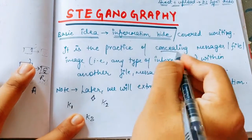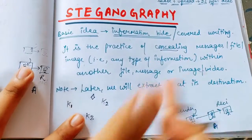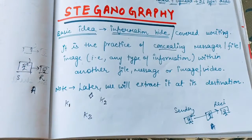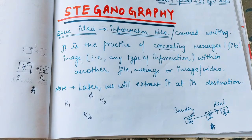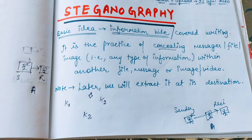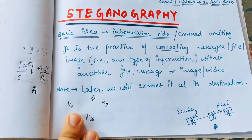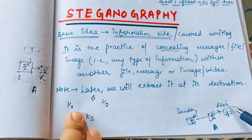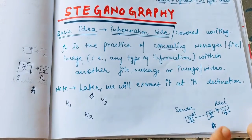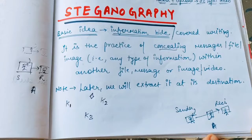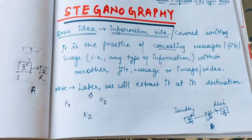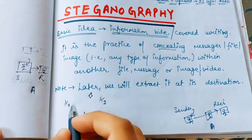So that is the concept of steganography — it is the practice of hiding the information. It can be a message, audio file, any image, or anything. It can be any information. We are hiding the information and sending it to the destination. And later, when it reaches the destination, the receiver will extract all the information at its destination. So this is the basic concept behind steganography.